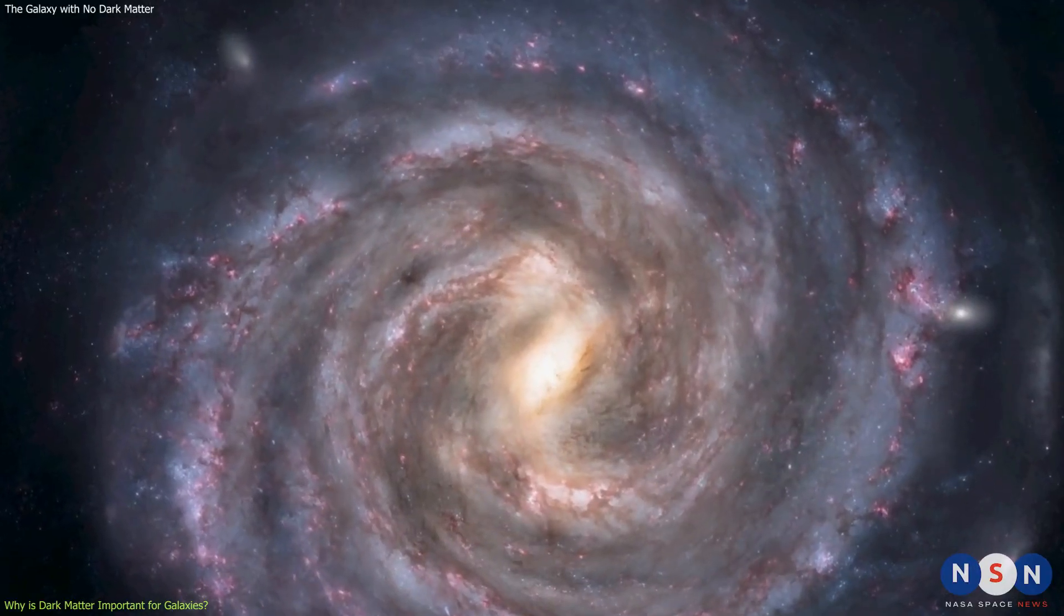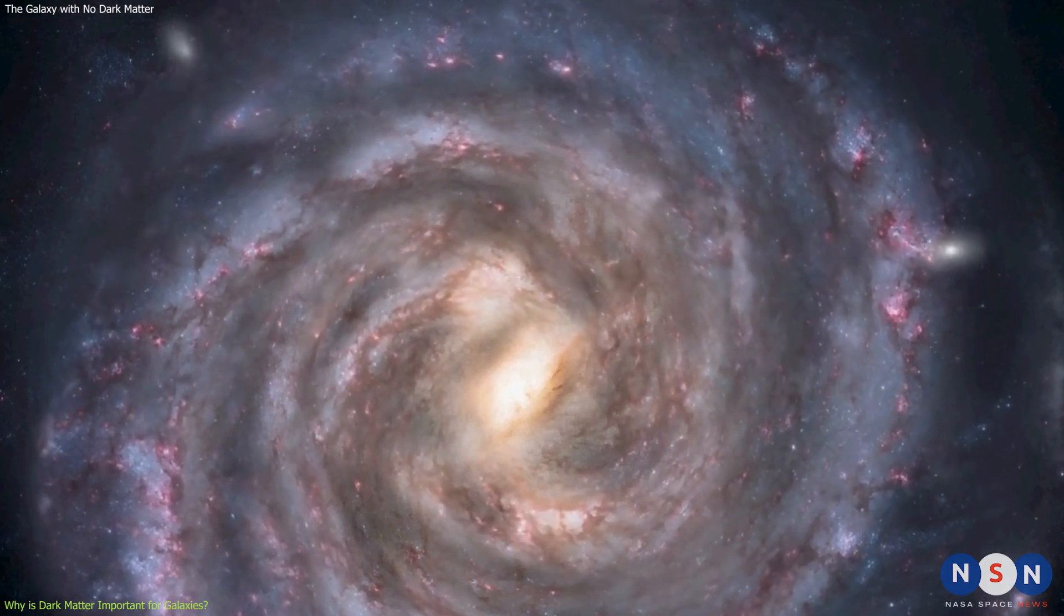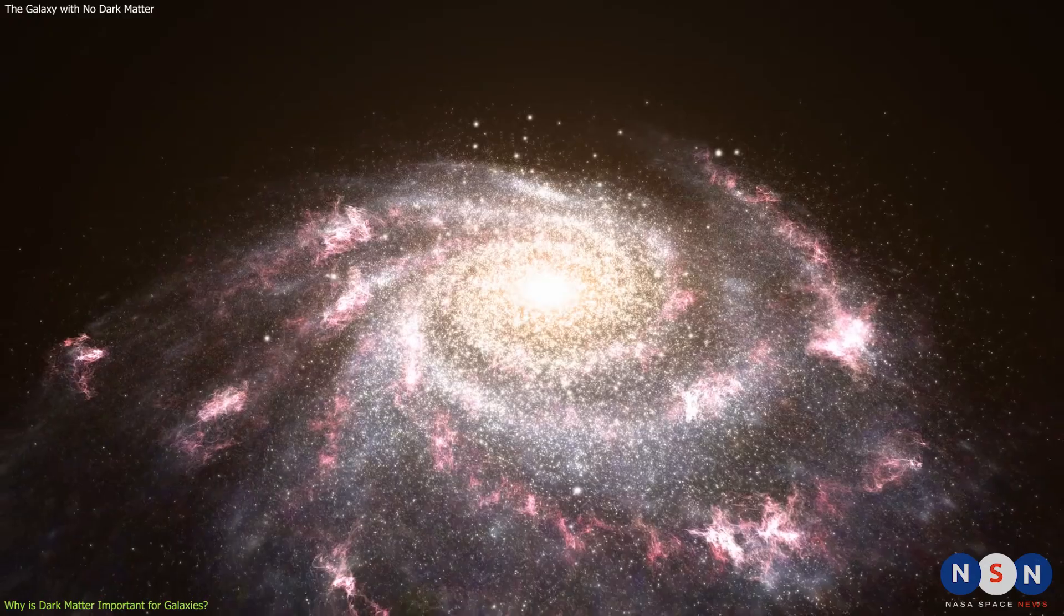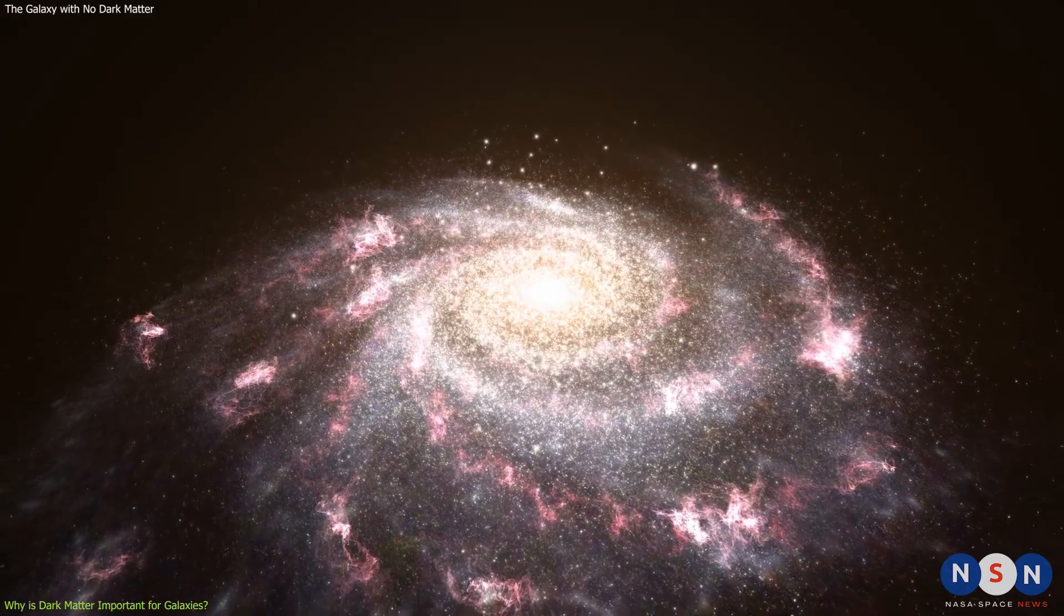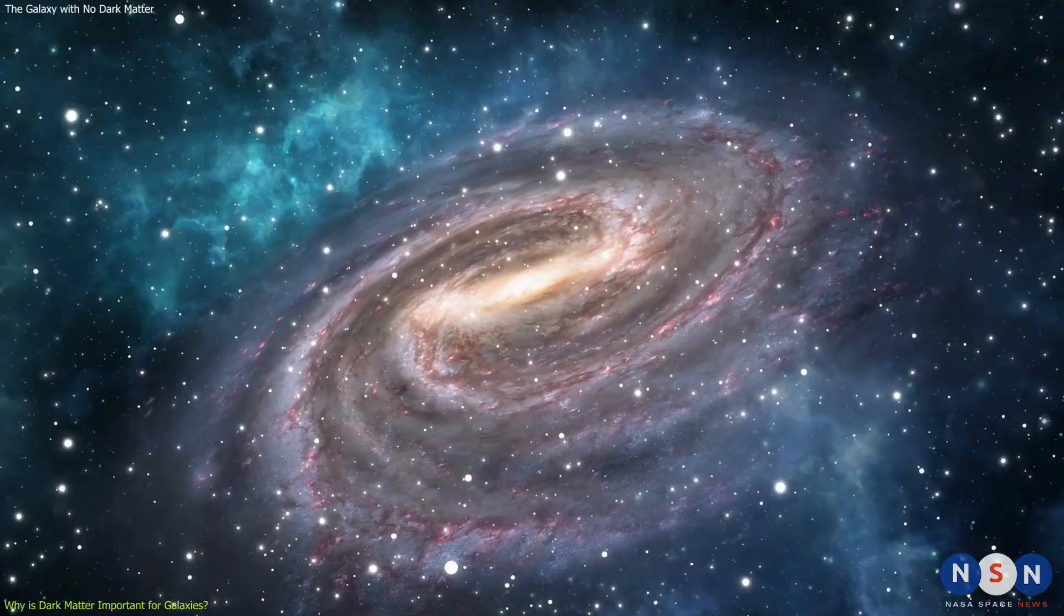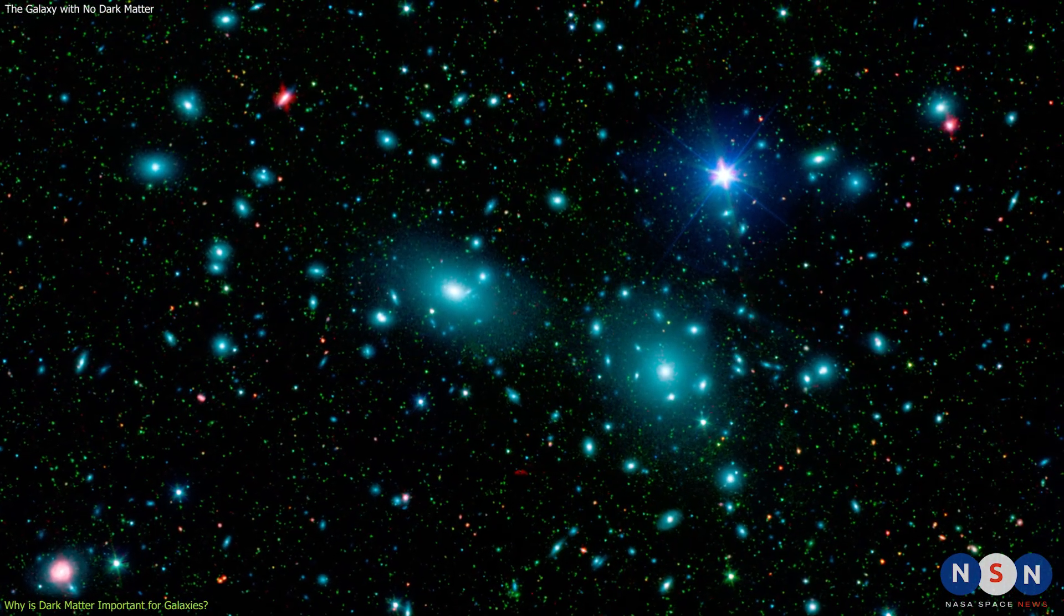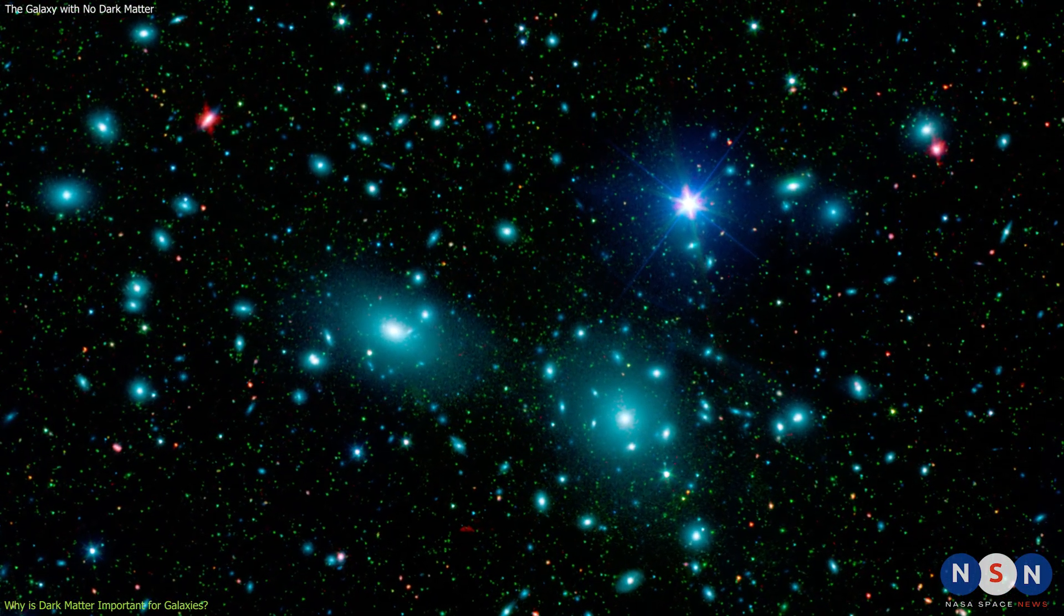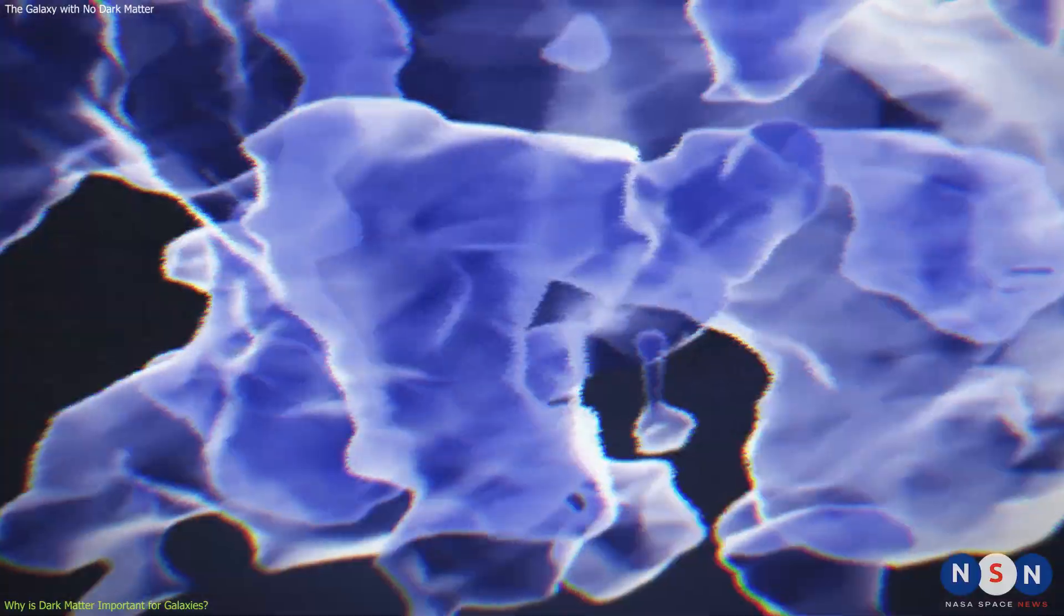Dark matter is believed to reside in halos surrounding galaxies, and it plays a crucial role in shaping their structure and dynamics. Without dark matter, galaxies would not be able to form or hold together, because the gravity of their visible matter would not be enough to overcome the centrifugal force of their rotation. This was first realized by Swiss astronomer Fritz Zwicky in 1933, who studied the Coma cluster of galaxies and found that they were moving too fast to be bound by their observable mass. He inferred that there must be some invisible mass providing extra gravity, and he called it dark matter.